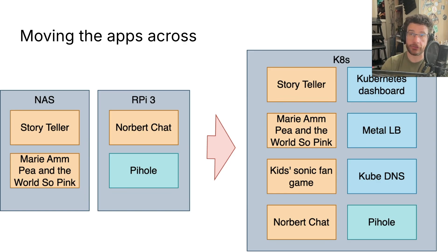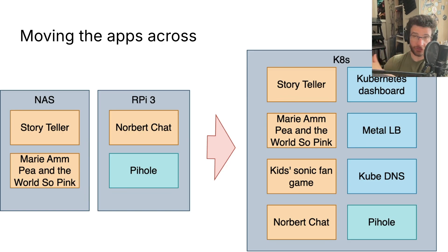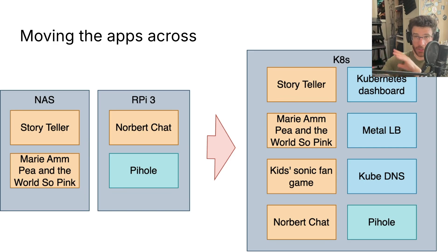MetalLB allows me to connect an IP address on my network to a service in Kubernetes. If a service has exposed something, it can link all that up — which is really nice.